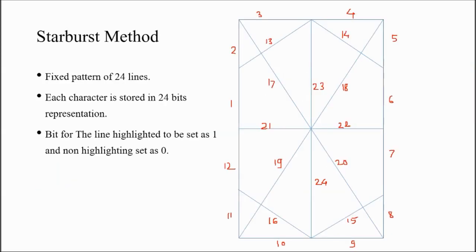One more method is starburst method. In starburst method, a fixed pattern of 24 lines is taken into consideration. Here you can see lines 1 through 24 - this is a fixed pattern.